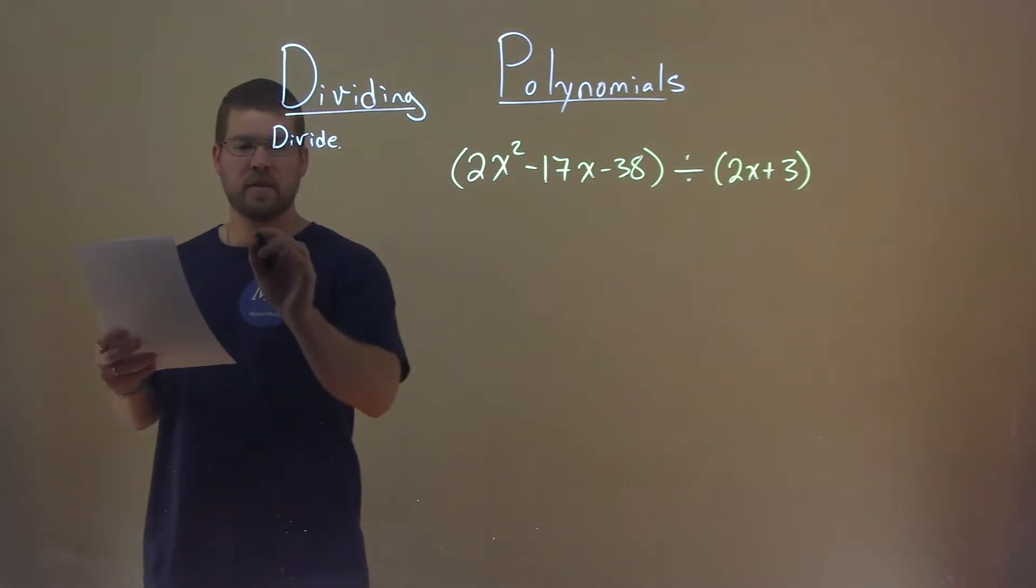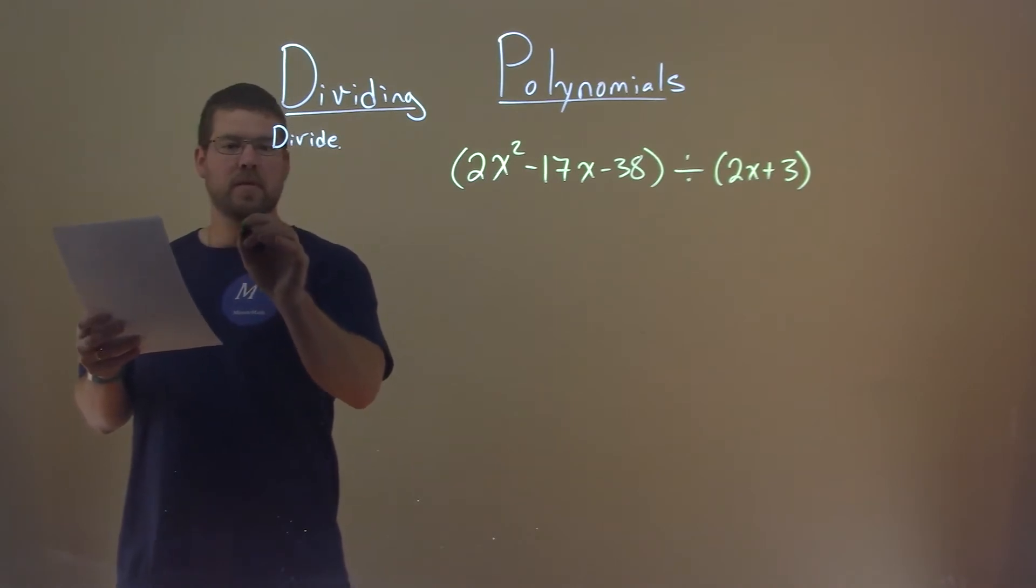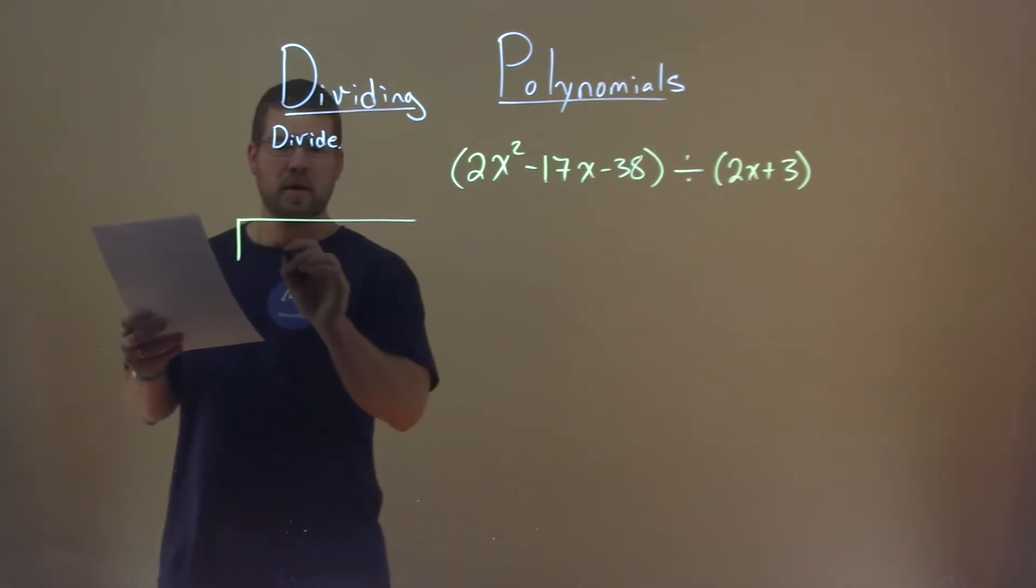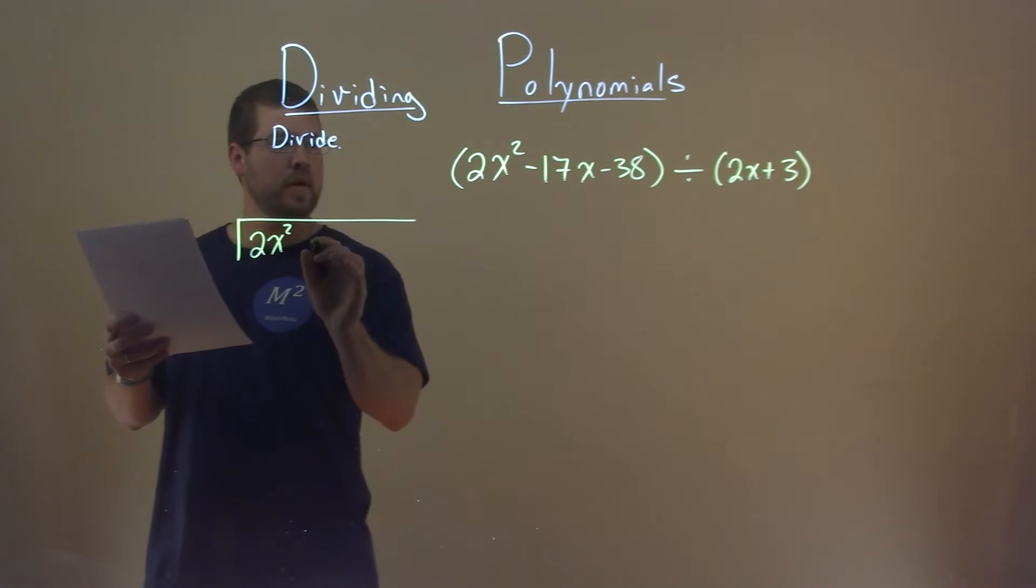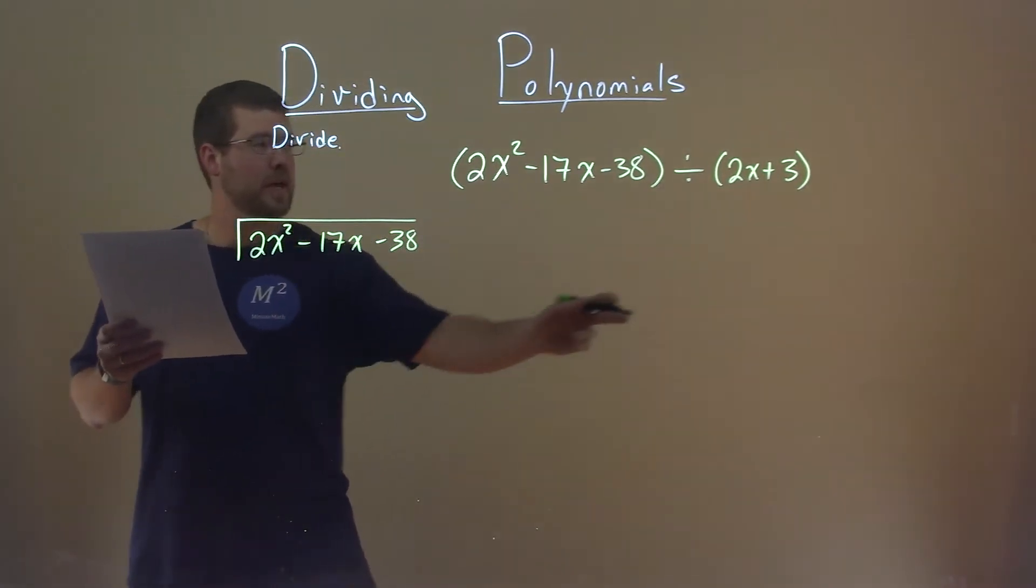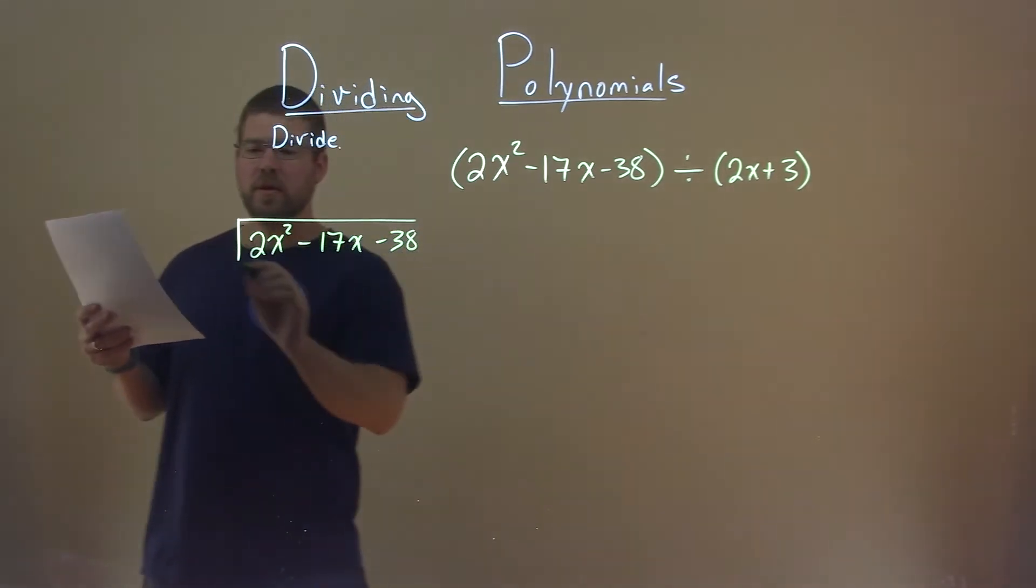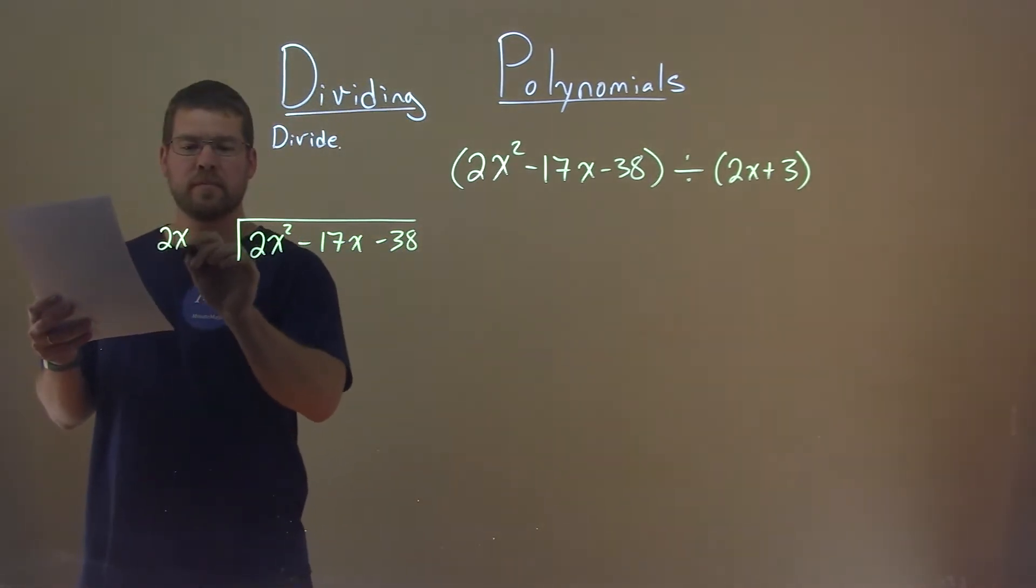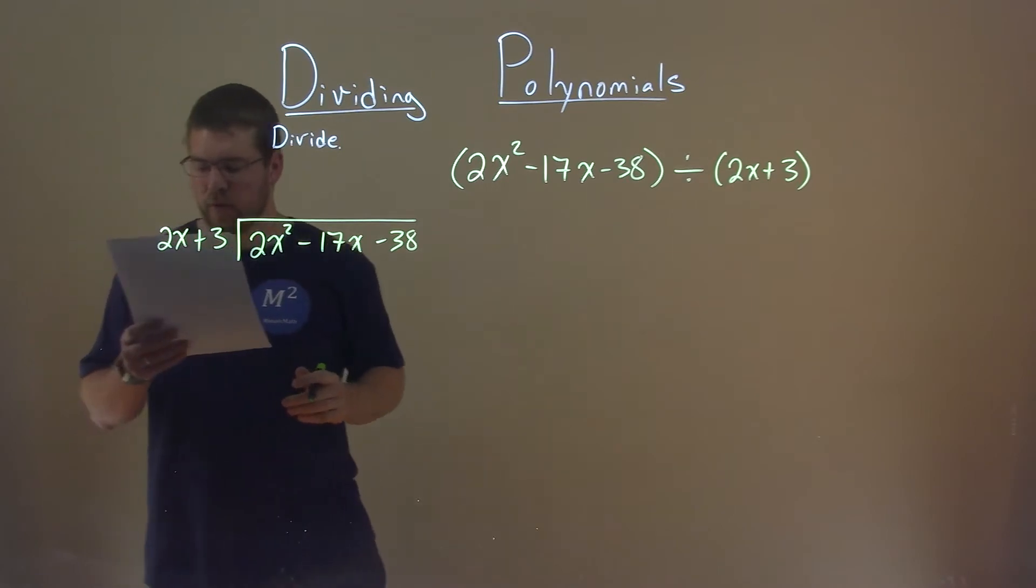This part goes on the inside now. So let's go right back here. We have 2x squared minus 17x minus 38. And we're taking the 2x plus 3, and we'll put it out here. Just like you would normally long divide.